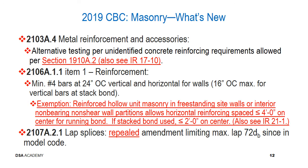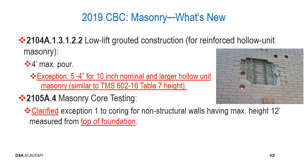Regarding lap splices in 2107A.2.1, the previous amendment that limited the maximum lap splice to 72 bar diameters has been repealed because that language is now in the model code. Regarding low lift construction in section 2104A.1.3.1.2.2, we still have a maximum pour height of 4 feet; however, we now allow that to be increased to 5 feet 4 inches for 10-inch nominal and larger hollow unit masonry through an exception, consistent with TMS 602.16 table 7.